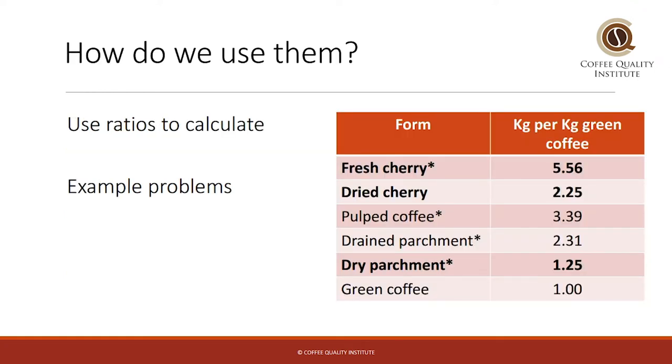Here's how we use them. You can see the chart here that begins at fresh cherry, dry cherry, pulped coffee, drained parchment, dry parchment, and green coffee. And on the right you can see the prospective weights. And everything is in respect to green coffee. So, for example, if we want to know how many kilos of fresh cherry are in one kilo of green coffee, it's 5.56. Now, again, this is for this study that was done in a region of Colombia. So your numbers might be a little bit different. In fact, I find at many farms I've worked at that it could be closer to six, six and a half, or maybe even seven. It just depends. So everything ties back to green coffee. Dry cherry, we know that that's a natural processed coffee that's been dried, and so forth and so on. What I'd like to do is walk us through a few example problems.